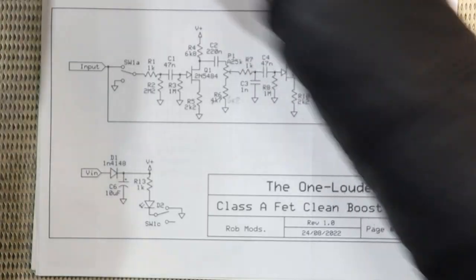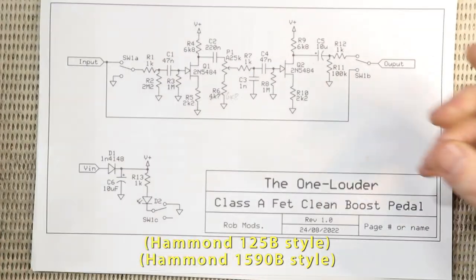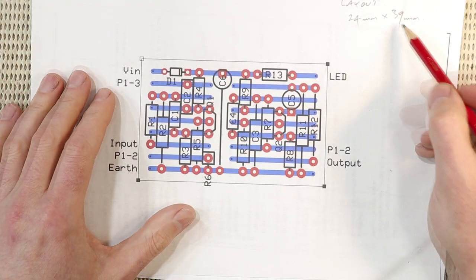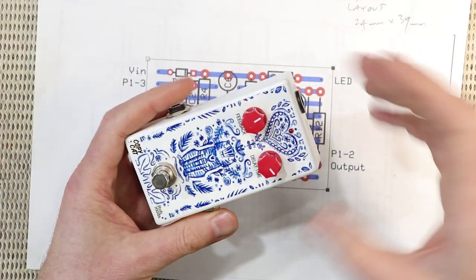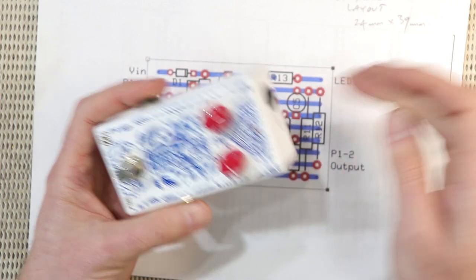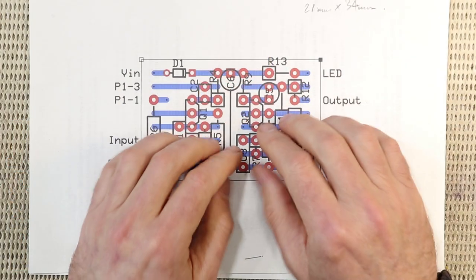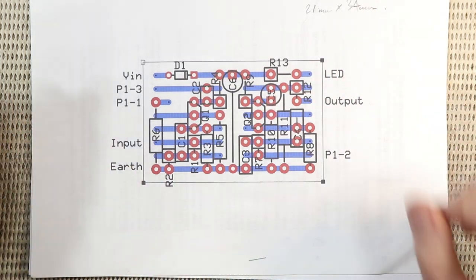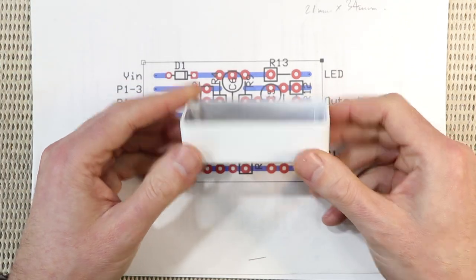When I originally designed this project I was planning to just make it in a standard stomp box enclosure or even one of these smaller ones. With that in mind I came up with this stripboard layout. It's 24mm by 39mm, so even with a battery it would easily fit in these enclosures. But when I saw the JHS pedal I revisited the stripboard layout and made it even smaller. This one is quite fiddly to make - a lot of the resistors are standing up on their ends - but it's only 21 by 34mm because I would like to give myself challenges. I'm going to try and squeeze my circuit into one of these little enclosures just like the JHS pedal.